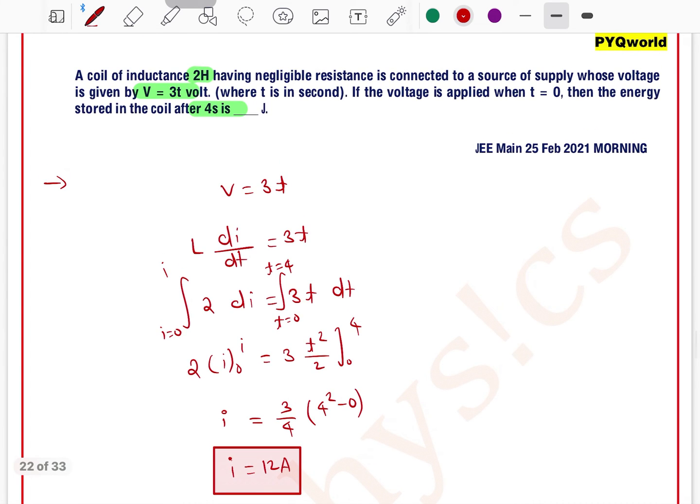Current at T equals 4 seconds is 12A. So now we find energy stored. Energy stored, what will be? E equals half L I squared, so 1 by 2...